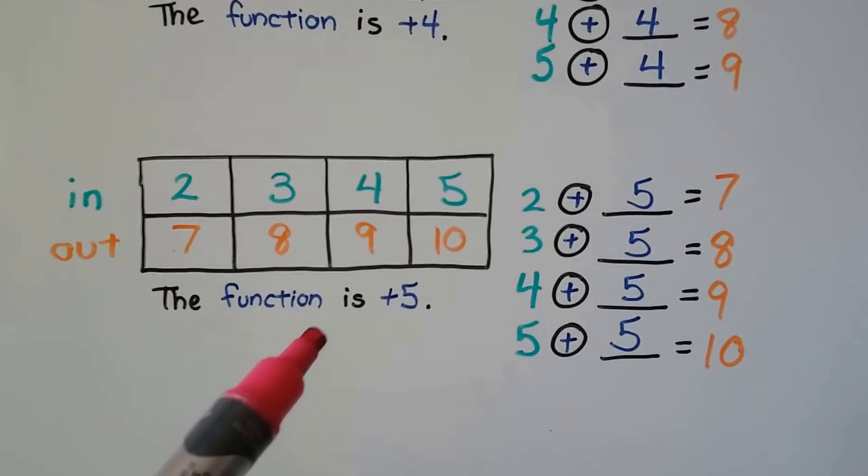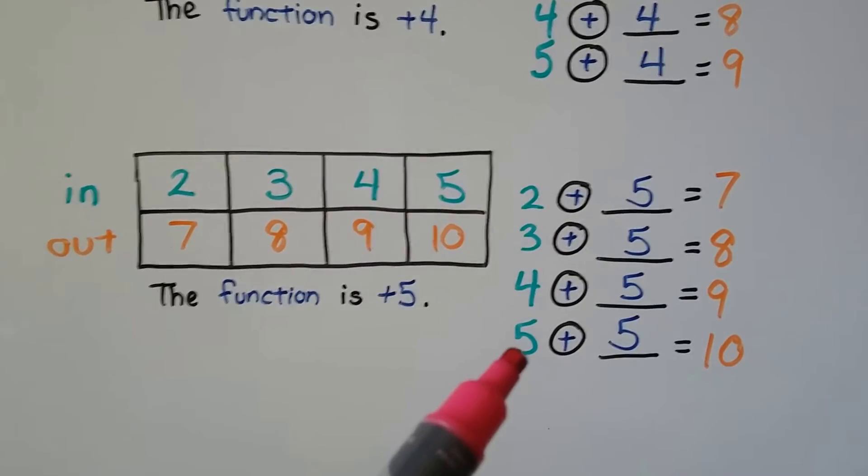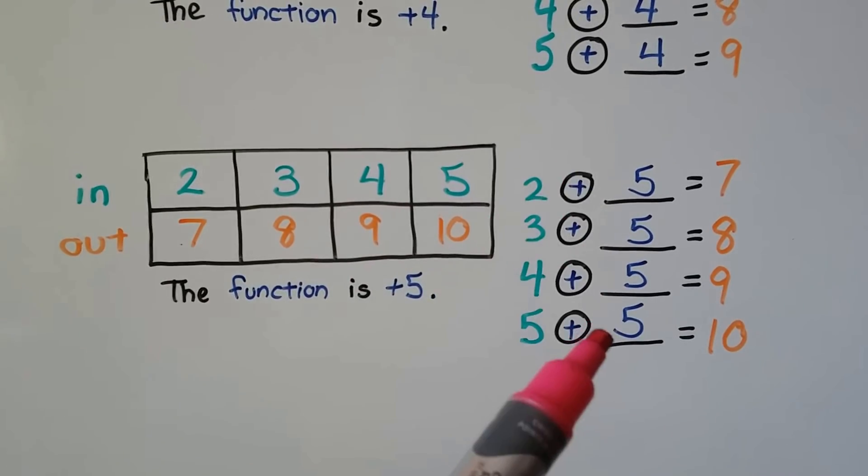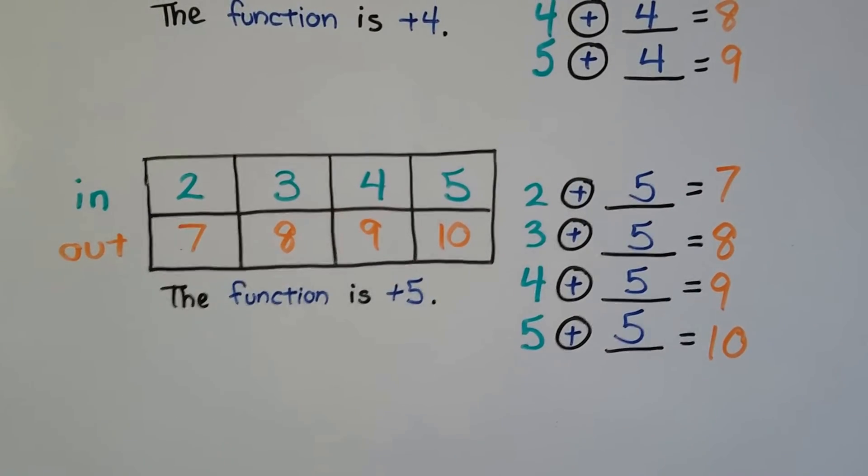This function table is of a plus 5. Every number we put in, 2, 3, 4, 5, we add 5 to it, and that's the number that comes out.